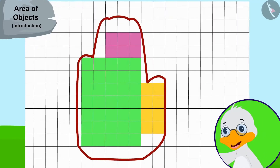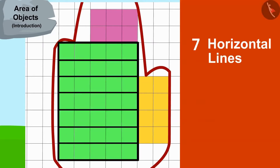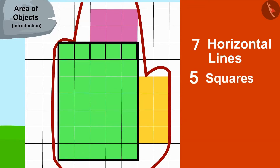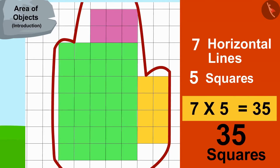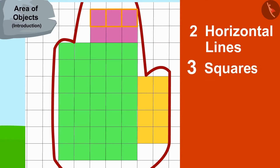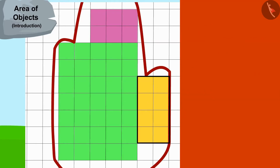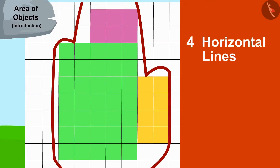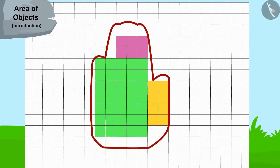Uncle made three rectangles in bunny's hand impression. This rectangle has seven horizontal lines and each line has five squares, meaning there are seven times five or thirty-five squares in this rectangle. This rectangle has two horizontal lines and each line has three squares, meaning two times three or six squares. And this third rectangle has four horizontal lines and every line has two squares, meaning four times two or eight squares.